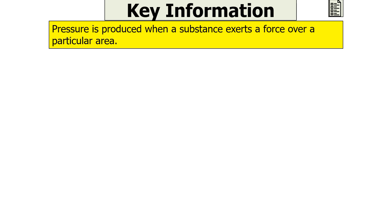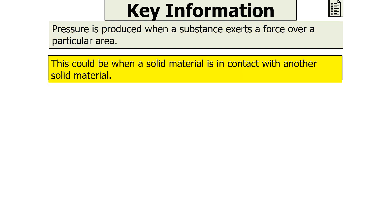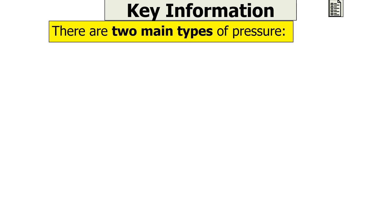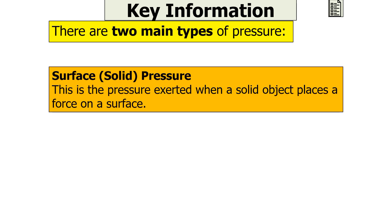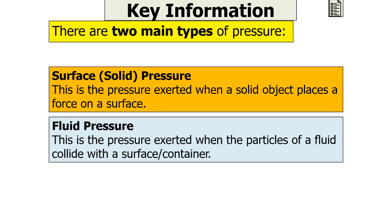Pressure is produced when a substance exerts a force over a particular area. This could be when a solid material is in contact with another solid material, or it could be when a fluid's particle — a liquid or a gas — collides with the surface or container they are in. There are two main types of pressure: surface or solid pressure, which is the pressure exerted when a solid object places a force on a surface, and fluid pressure, which is the pressure exerted when the particles of a fluid collide with a surface or a container.